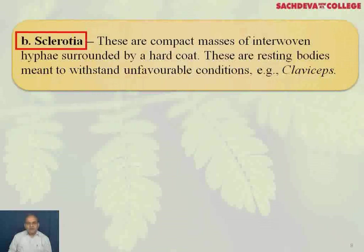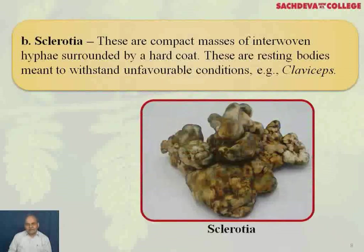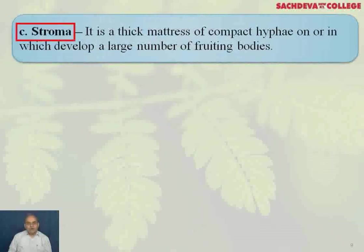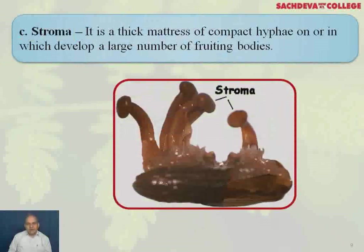Sclerotia are compact masses of interwoven hyphae surrounded by a hard coat. These are resting bodies meant to withstand unfavorable conditions; an example is Claviceps. Stroma is a thick mattress of compact hyphae on or in which a large number of fruiting bodies develop, and these fruiting bodies are referred to as stroma.